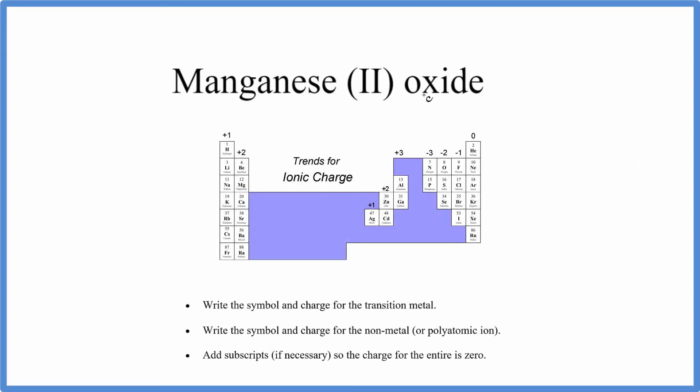To write the formula for manganese (II) oxide, that's MnO, we'll look at the periodic table.